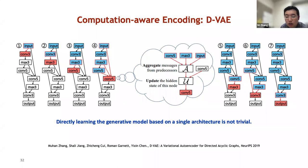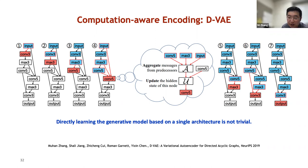Another computation-aware encoding in the literature is the learning-based method DVAE, which uses a shallow GRU to encode computation. Its encoder is trained using a variational autoencoder reconstruction loss via asynchronous message passing. However, directly learning the generative model from a single architecture is not trivial in practice, making its pre-training less effective, and therefore its downstream NAS performance is not competitive.